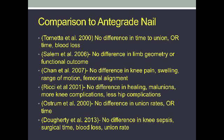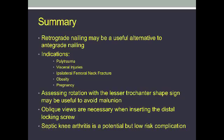Briefly, I want to show my review of the literature comparing antegrade to retrograde nailing for femur shaft fractures. Several prospective randomized trials have shown no difference in clinical outcomes between the two approaches. I think more research needs to be done, but the literature thus far shows that the two approaches are clinically equivalent. In summary, retrograde nailing may be a useful alternative to antegrade nailing, especially in clinical scenarios such as polytrauma patients, ipsilateral femoral neck and shaft fractures, obesity, and pregnancy. Assessing rotation with the lesser trochanter shape sign may be useful intraoperatively to avoid malunion. Oblique views are absolutely necessary when inserting a distal locking screw to ensure appropriate length and possibly prevent further hardware removal. Septic knee arthritis is a potential but low-risk complication associated with retrograde nailing of femur shaft fractures.